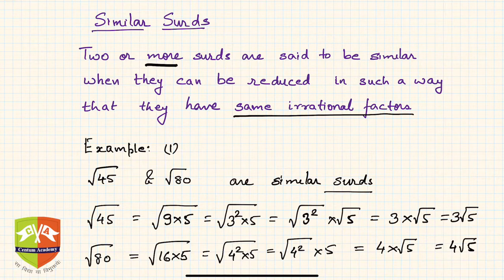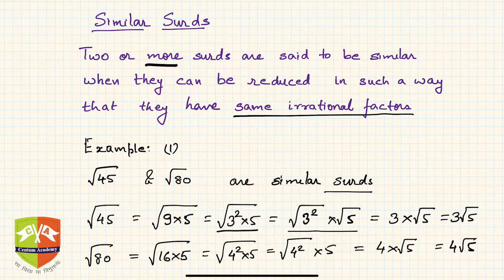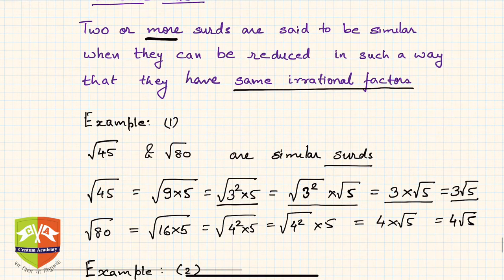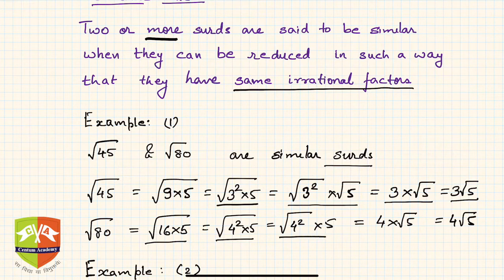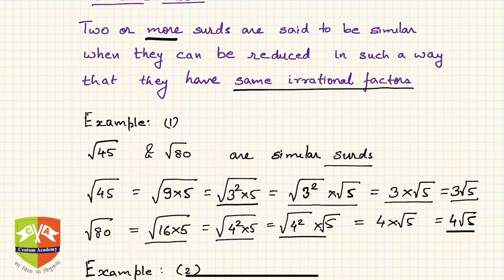√45 is nothing but √(9×5), which is √(3²×5), which equals √(3²) × √5 = 3√5. What about √80? √80 is √(16×5) = √(4²×5) = √(4²) × √5 = 4√5. Now if you compare √45 and √80, you will see the √5 component is present in both — they are the same.